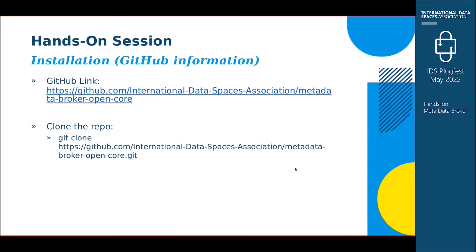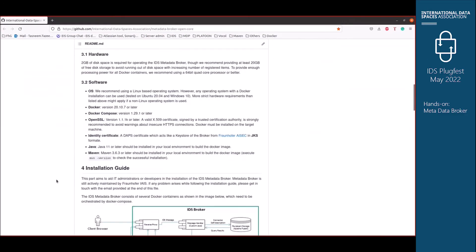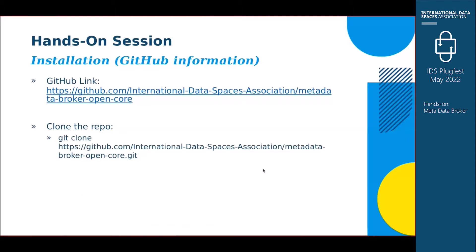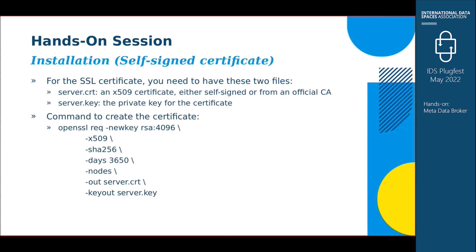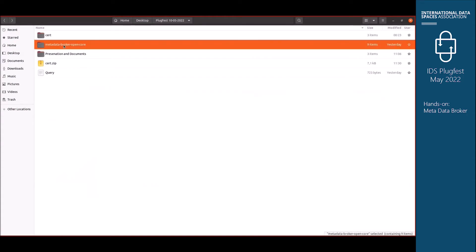Let's start with the GitHub link. This is our GitHub page where the installation guide is — whatever you see in the steps we will cover in this session. You can also find our contact information at the bottom, where you can create an issue or contact us by email. The first step is to clone the repository.